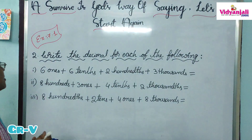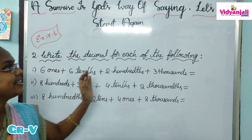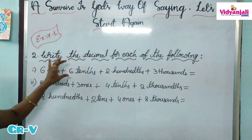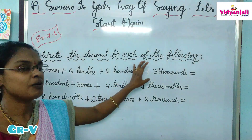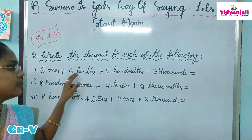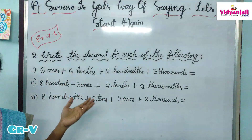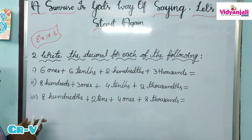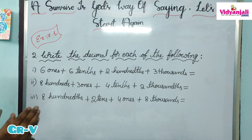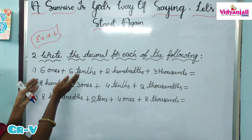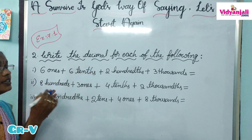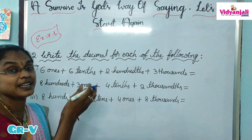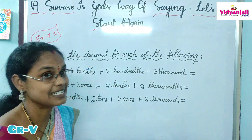Second part: write the decimal for each of the following. Here the expanded form is given — we have to make it a normal number. While making it a normal number, we have to identify till which place value is the whole part, and from which place to which place is the decimal part.